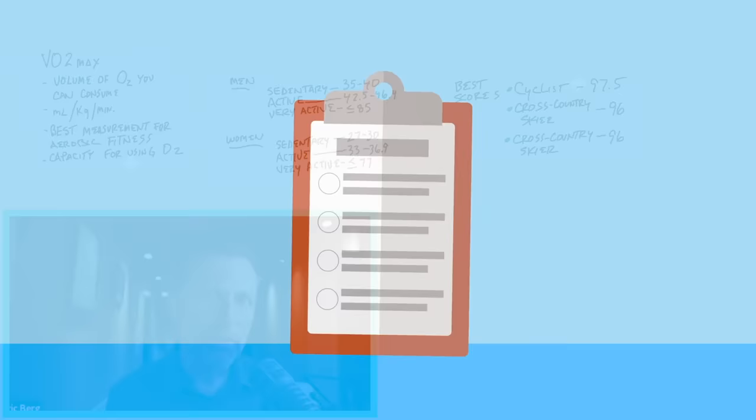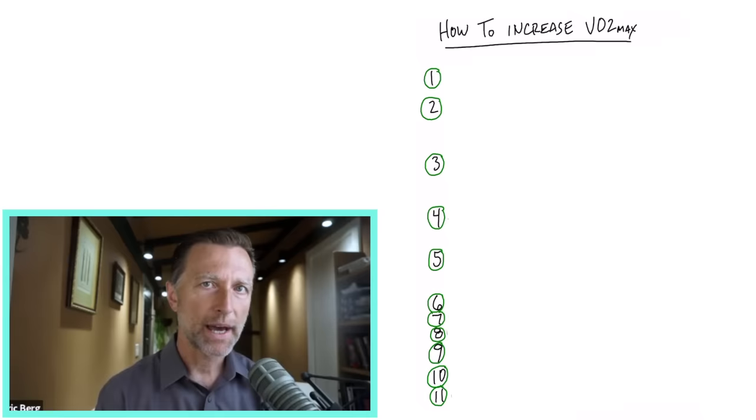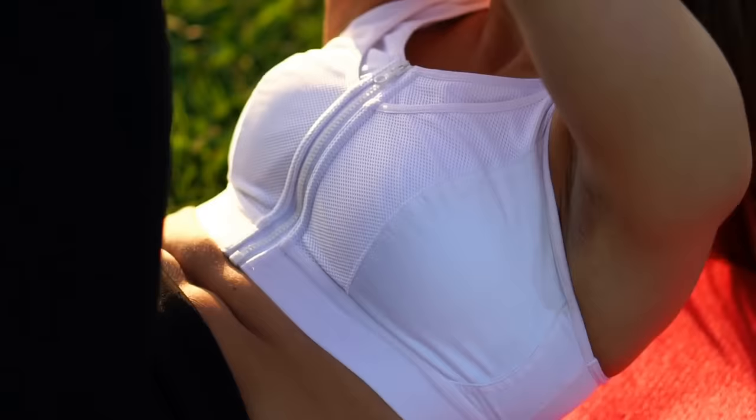So today, let's just run down the list of all the things you can do to increase this VO2 max, which is a great measurement of your health, as well as your capacity to live a long time. Number one, just doing more exercise, more exercise training will increase your VO2 max.